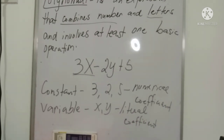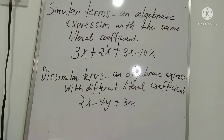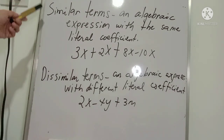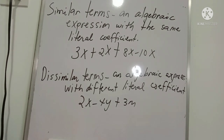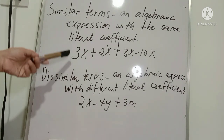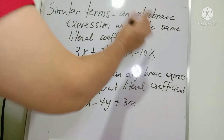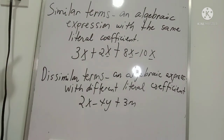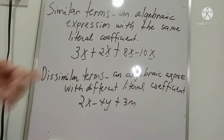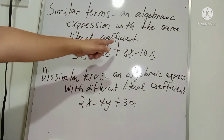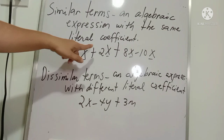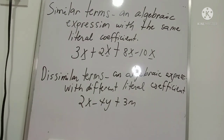Let us differentiate similar terms and dissimilar terms. Similar terms are algebraic expressions with the same literal coefficient. For example, in 3x + 2x + 8x − 10x, all terms share the literal coefficient x, so we can combine them: 3x + 2x + 8x = 13x, and 13x − 10x = 3x.